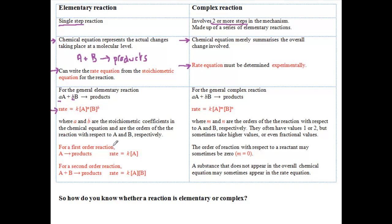For a first order reaction A going to products, the rate equals the rate constant times concentration of A. And for a second order reaction A plus B going to products, the rate is the rate constant K times the concentration of A times the concentration of B. In both cases, the order with respect to each of the reactants is 1.